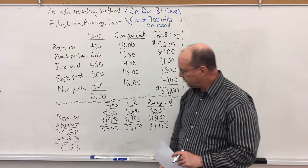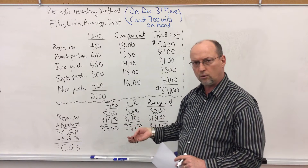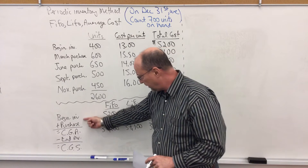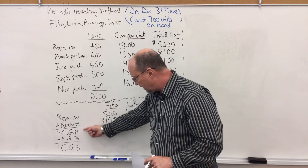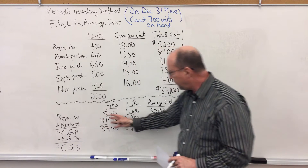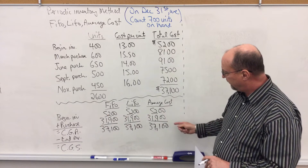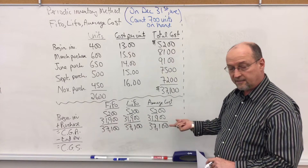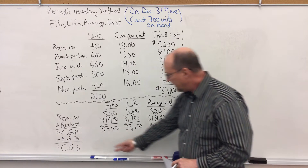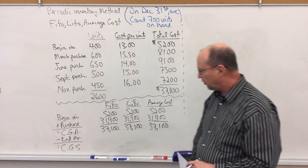Now down below, let's look at what we call the cost of goods sold equation. Beginning inventory plus purchases equals cost of goods available. Notice that for all three methods — FIFO, LIFO, and average cost — it's the same. That's very useful to know. What will be different is ending inventory and cost of goods sold.